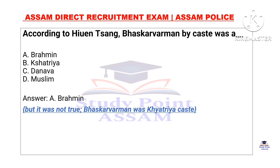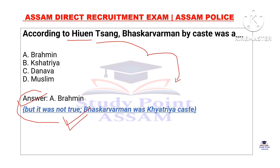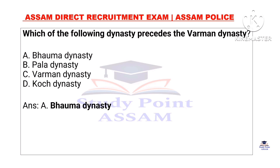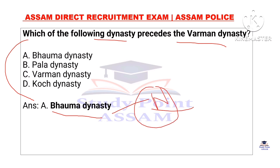According to Hiuen Tsang, Bhaskar Varman by caste was a Brahmin. The people of Kamrupa are described, and Bhaskar Varman represents the Brahmin caste. According to Hiuen Tsang, the people of Kamrupa are short in height and yellow in complexion. The following dynasty preceded the Burman dynasty. The Burman dynasty was preceded by Narkasura, who was a former king. The Narkasura dynasty was a former dynasty before the Burman dynasty.